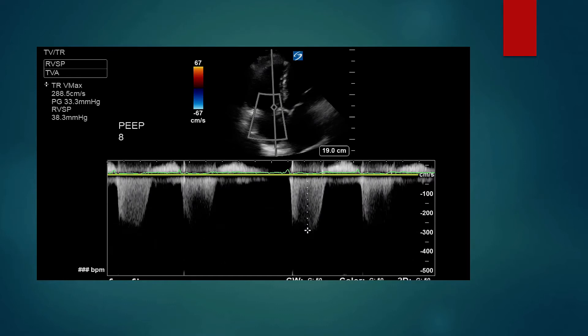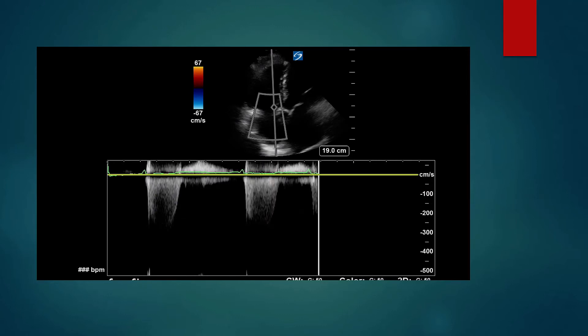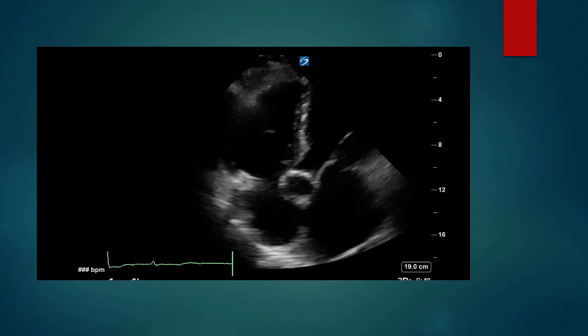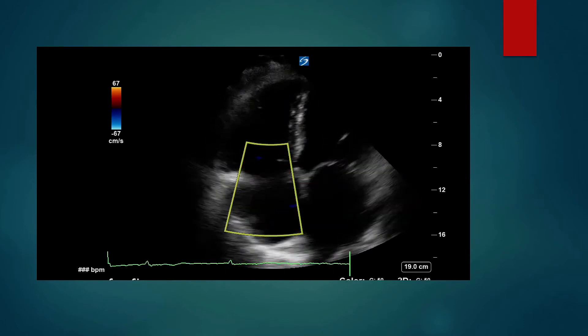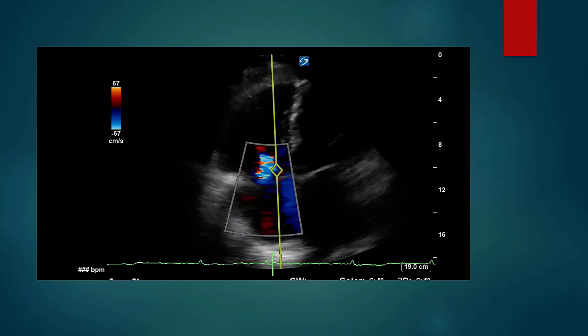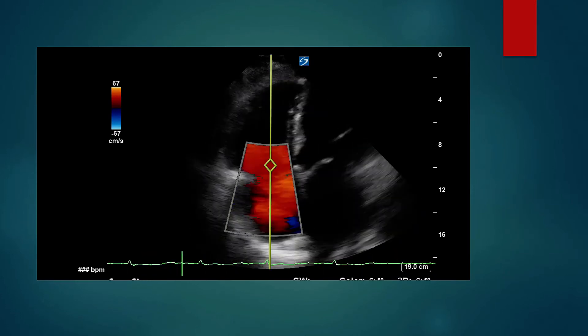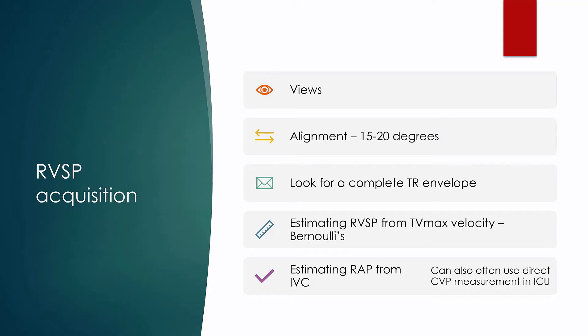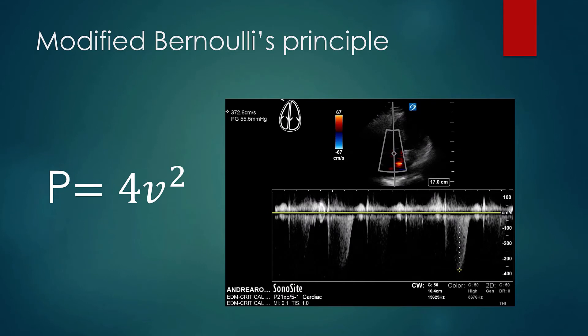A TR jet velocity less than 2.8 meters per second is considered normal, while a velocity greater than 3.4 meters per second is highly suggestive of pulmonary hypertension. If it falls between 2.8 and 3.4 meters per second, we will likely need to rely on other markers to support or refute the possibility. We can also translate this maximum velocity into a pressure gradient via the simplified Bernoulli equation: the pressure gradient equals 4 times the square of the maximum velocity. Most machines will do this calculation automatically. It is also possible to use the velocity time integral of the jet to derive the same calculation, which some experts consider more accurate, though slightly more time-consuming.